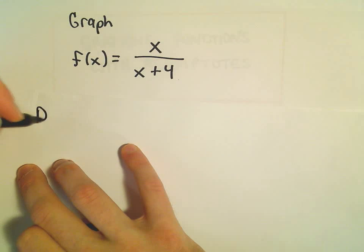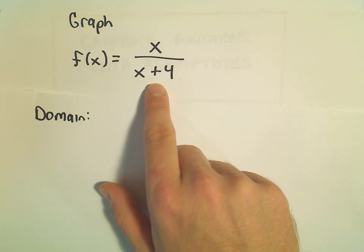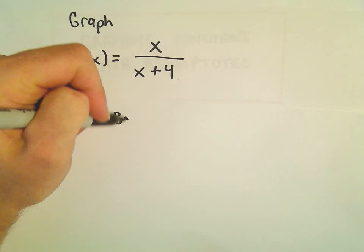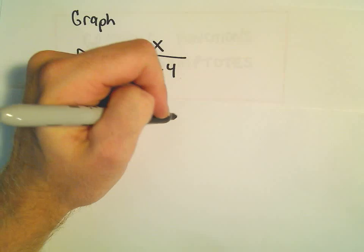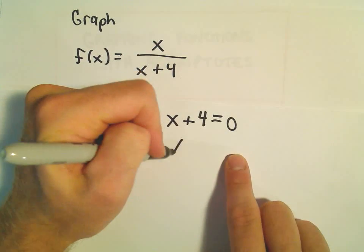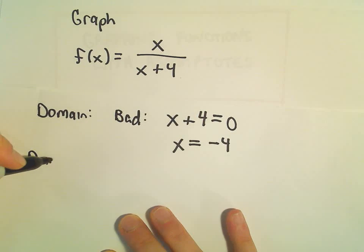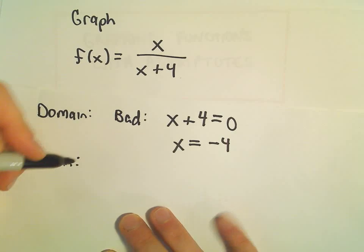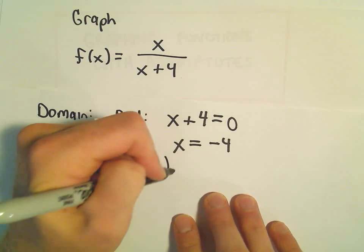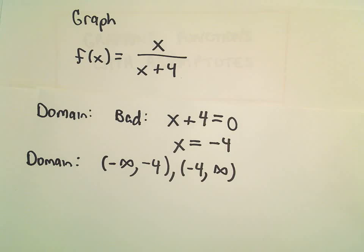The first thing is to think about the domain of this function. For a rational function, the only thing you want to avoid is dividing by 0. The bad value would be when the denominator equals 0, which gives us x equals negative 4. So the domain is all numbers except negative 4: negative infinity to negative 4, and then negative 4 up to positive infinity.